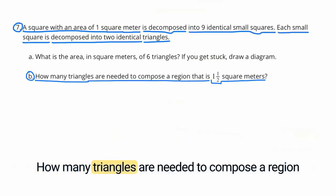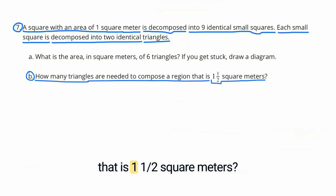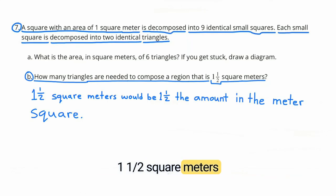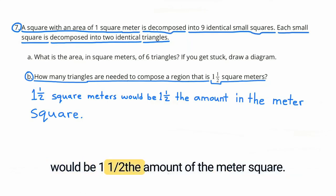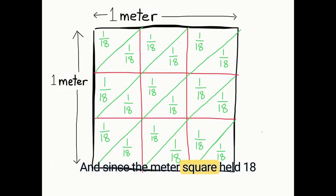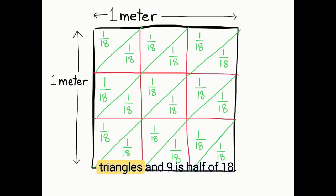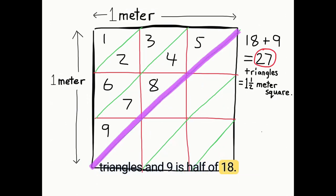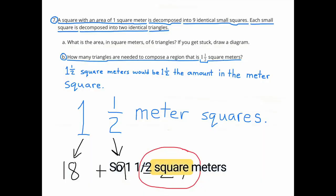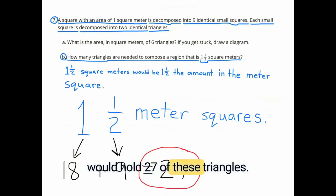B: How many triangles are needed to compose a region that is one and a half square meters? One and a half square meters would be one and a half times the original square meter. Since the original square meter held 18 triangles, and 9 is half of 18, then 18 plus 9 equals 27. So one and a half square meters would hold 27 of these triangles.